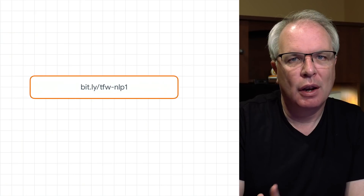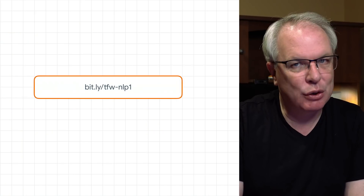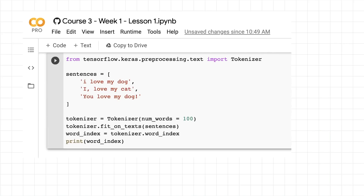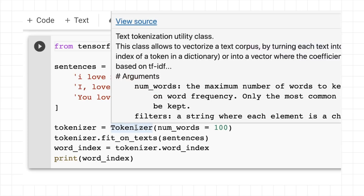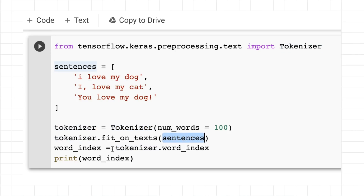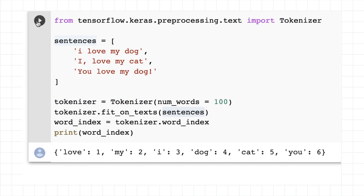I'm going to step through a Colab with the code for all of this, and then you can try it out for yourself. Here's the URL of that Colab — pause the video to give it a try. Here we can see we're going to import the tokenizer, and I have a number of sentences: 'I love my dog' in lowercase, 'I love my cat' with uppercase I, and things like 'you love my dog' with an exclamation. We'll then use the tokenizer, fit it on the text of these sentences, and take a look at the word index. We'll see that the word 'love' is indexed as number one — it became token number one because love was used the most. 'My' was also used the most, with three occurrences just like love, and you can see those at the top of the index.